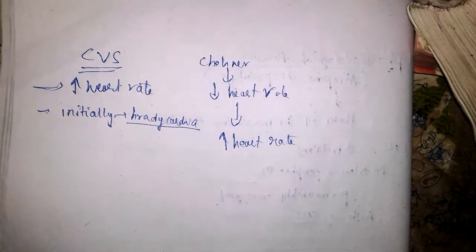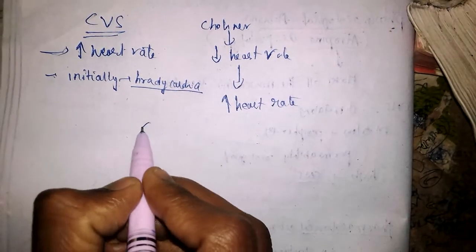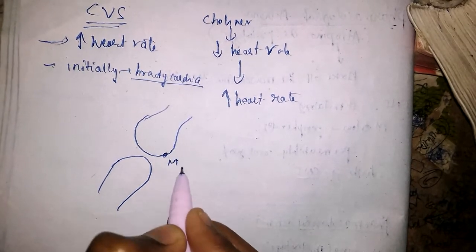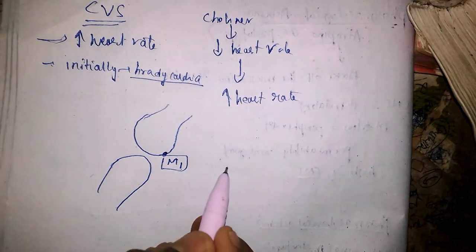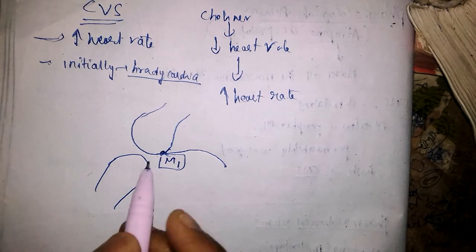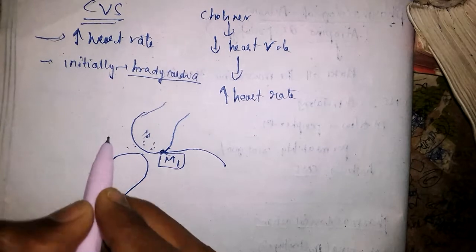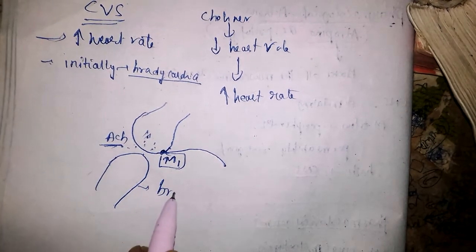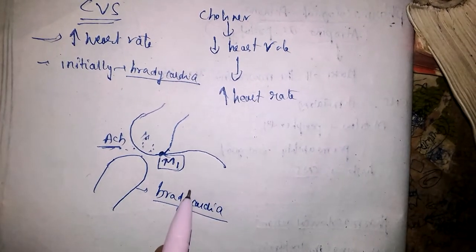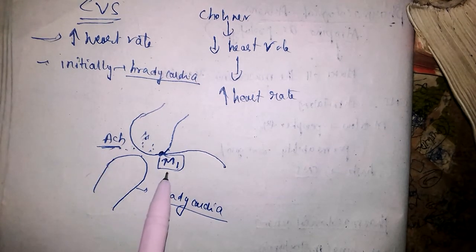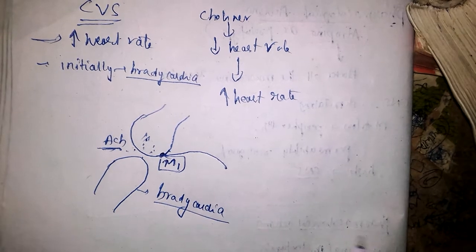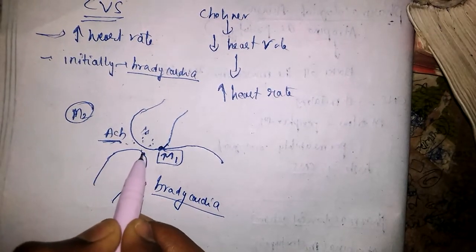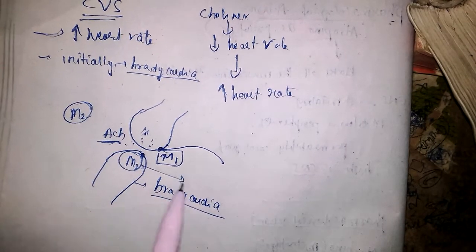The reason for initial bradycardia is: there is an auto-receptor (M1) on the presynaptic membrane. Initially, there is inhibition of this M1 auto-receptor, which results in increased release of acetylcholine — responsible for bradycardia. After some time, the M2 postsynaptic receptor will be blocked, which results in tachycardia.